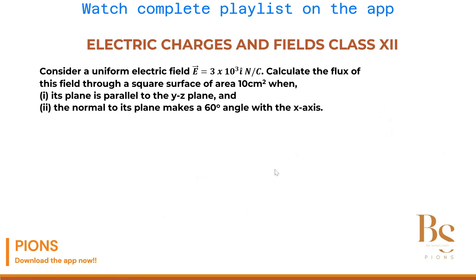The question says: consider a uniform electric field E, which equals 3 into 10 to the power 3, î cap. This means the electric field is along the x-axis. Calculate the flux of this field through a square surface, when the plane is parallel to the yz-plane, and the normal to its plane makes 60 degrees with the x-axis.